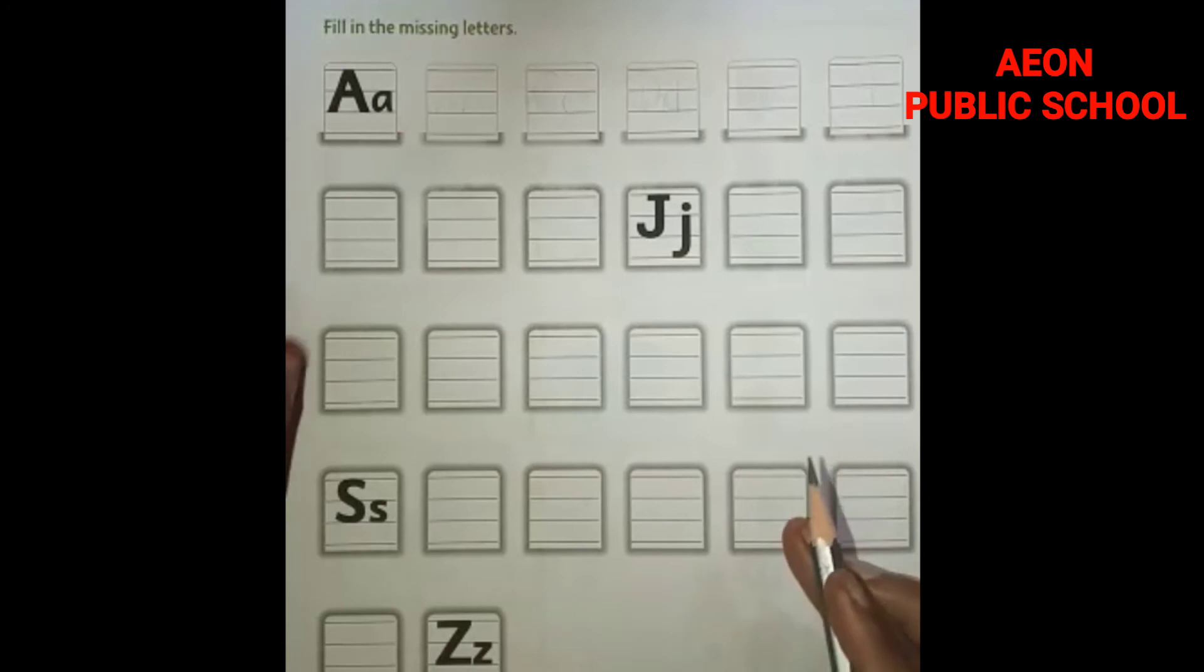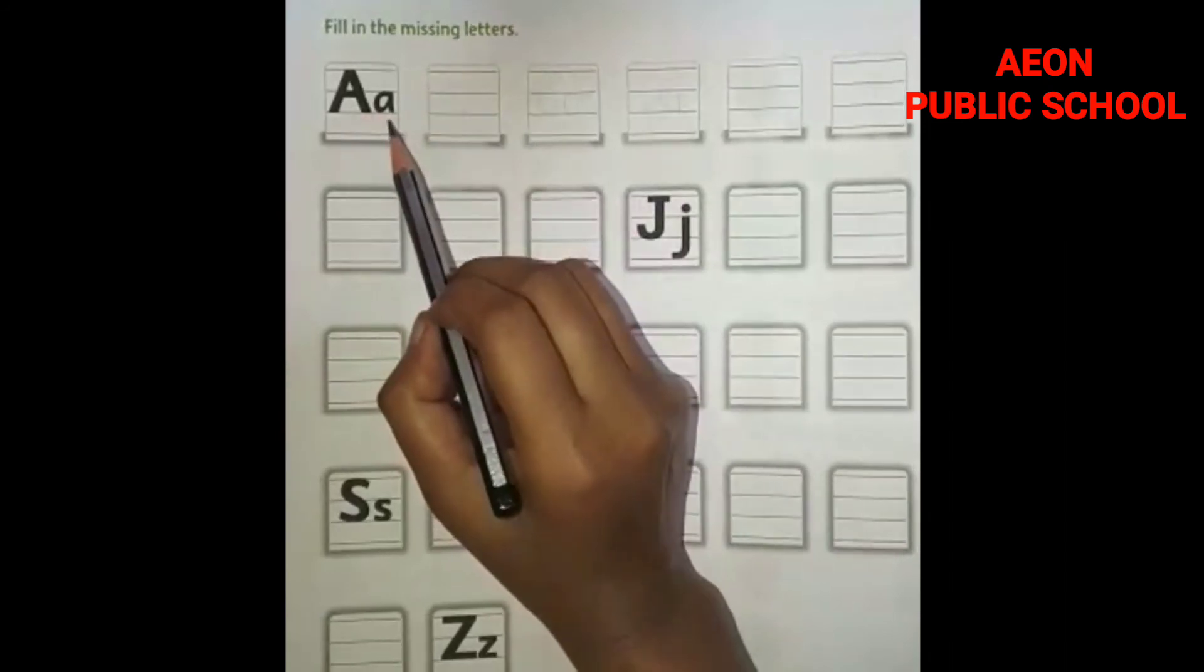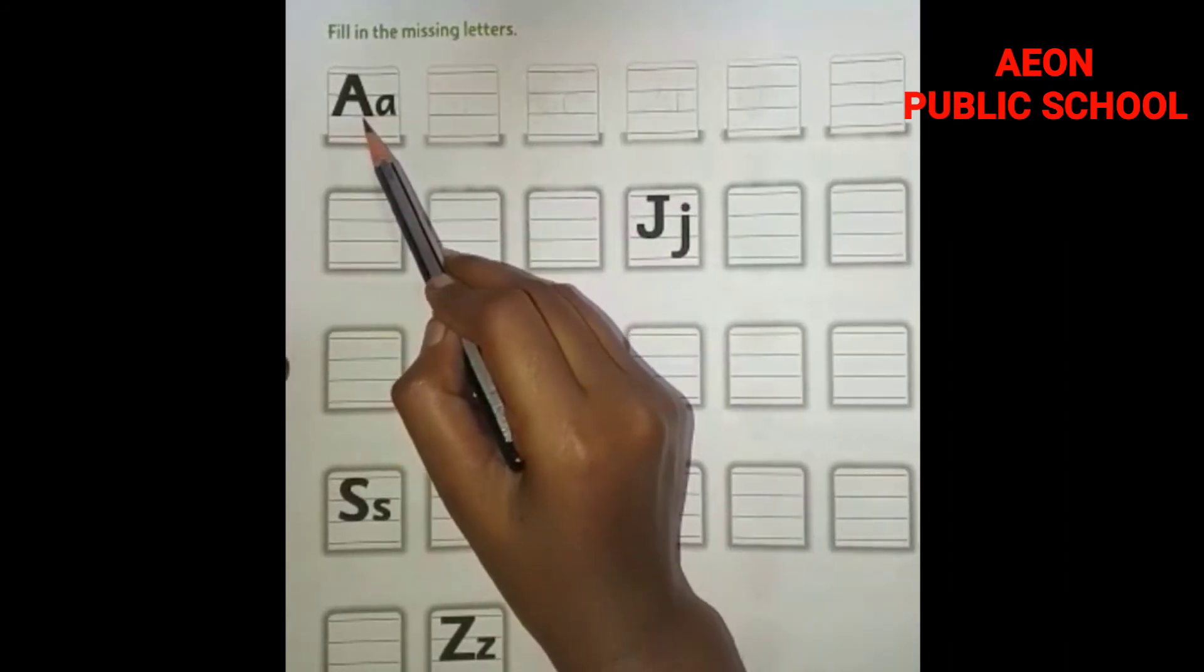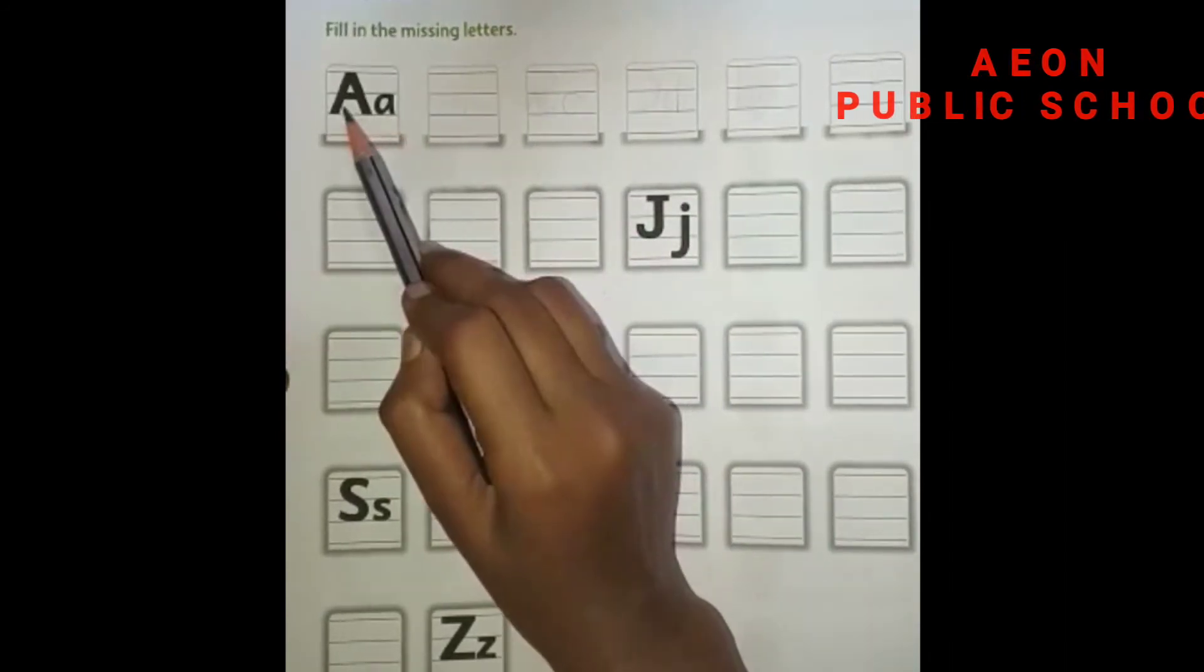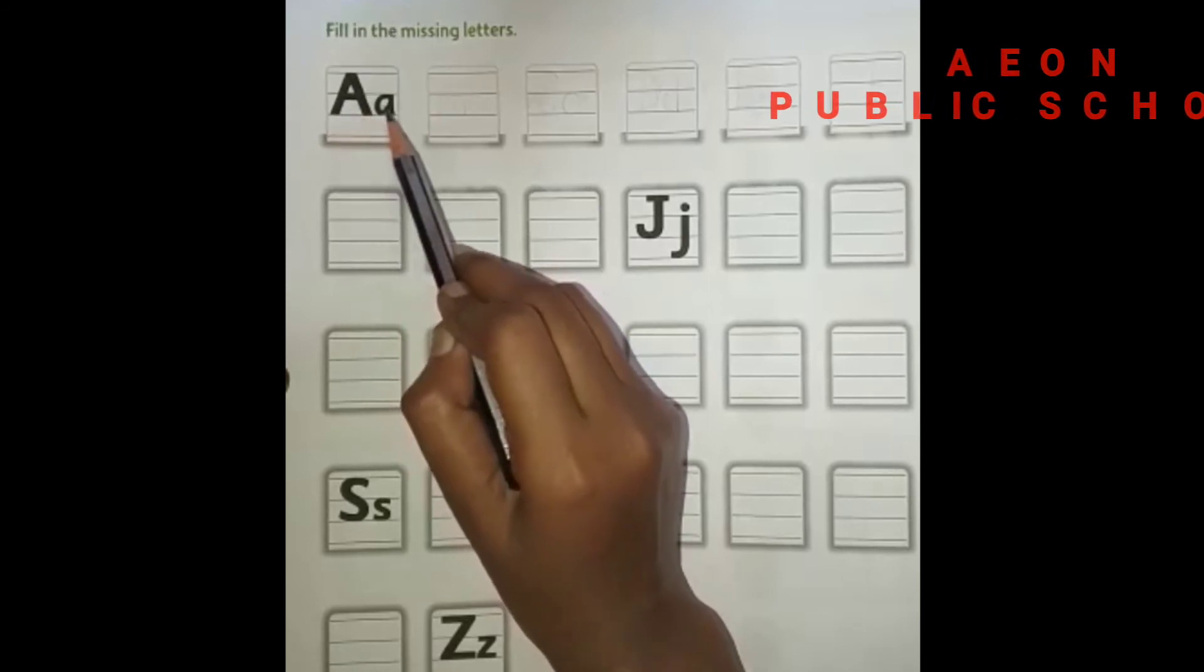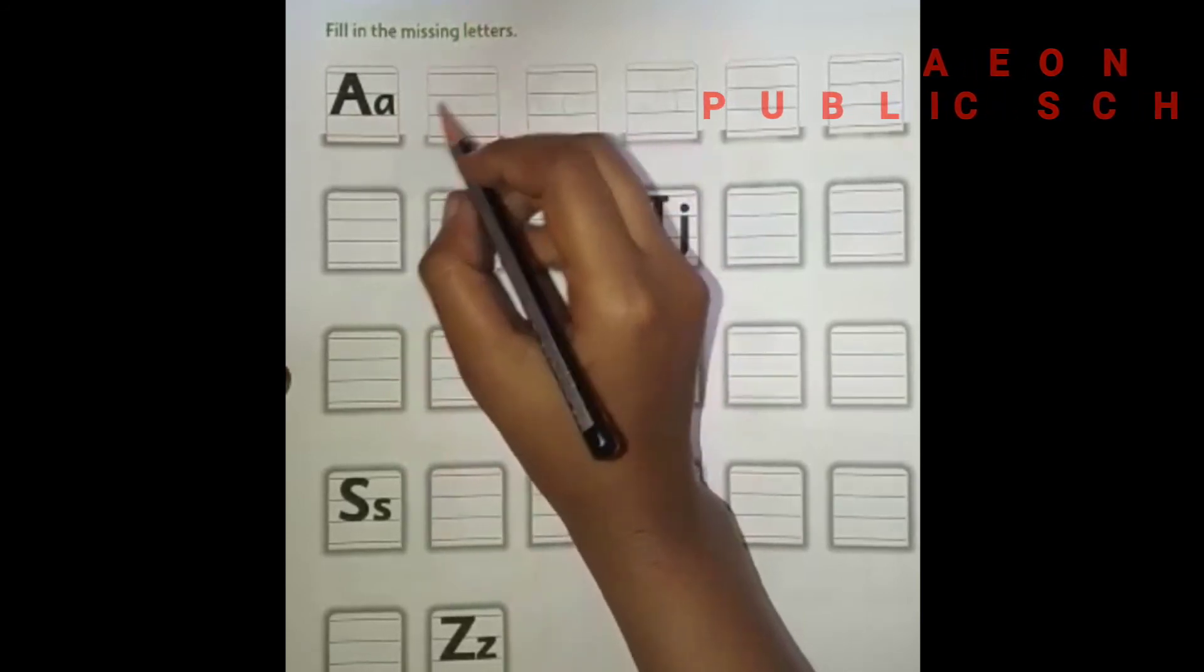You know we have learned A to Z in earlier classes. I hope you know all your A, B, C, D. So let's see what is there. The first letter is capital A and small a. There are two forms, capital form and small form. So we have to write both the forms.